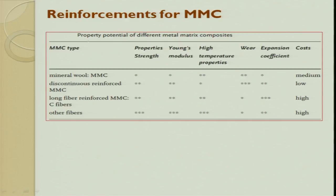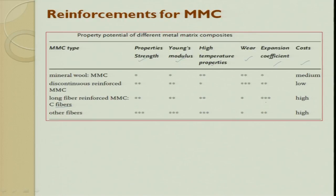Looking at the property potential of different metal matrix composites: properties include strength, Young's modulus, high temperature capability, wear resistance, coefficient of expansion, and cost. For long fiber reinforced MMC made from carbon fiber — properties are very good, Young's modulus is very good, high temperature performance is good, wear resistance is okay, expansion is extremely good — but it is extremely costly. These types of composites are used only for aerospace applications, not automobile.